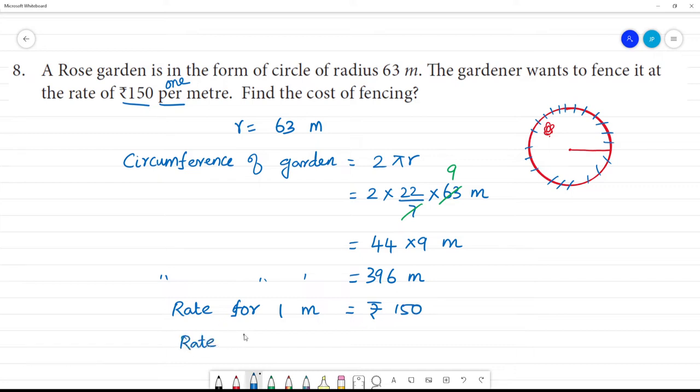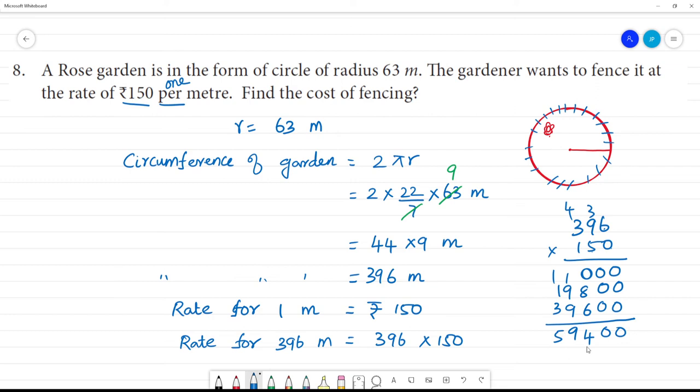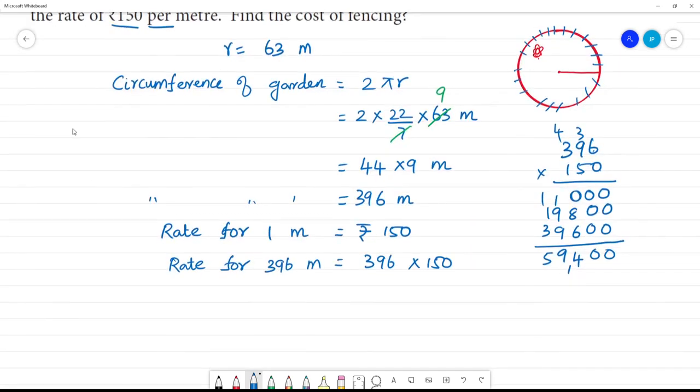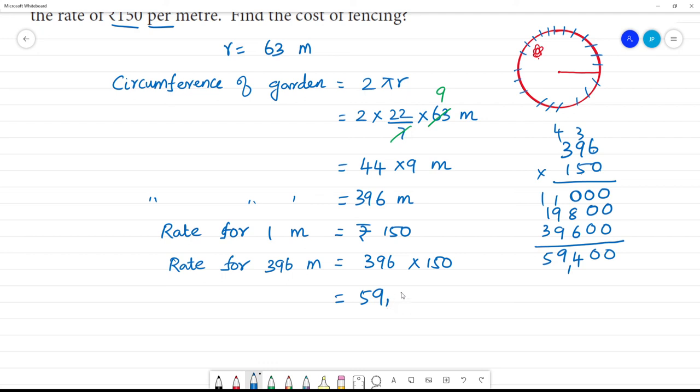Rate for 396 meters equals 396 times 150. Calculating: 6 times 0 is 0, 9 times 0 is 0. 6 times 5 is 30, remainder 3. 9 times 5 is 45 plus 3 is 48, remainder 4. 3 times 5 is 15 plus 4 is 19. The total is 59,400 rupees.